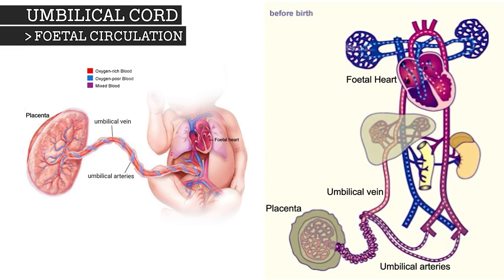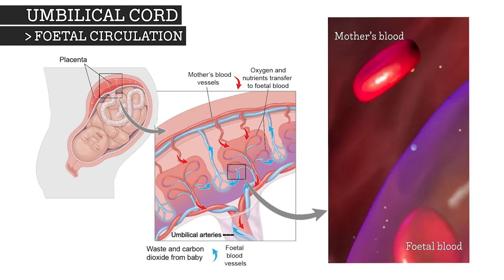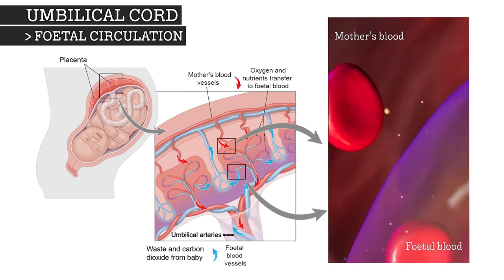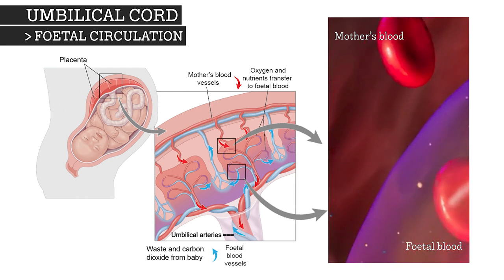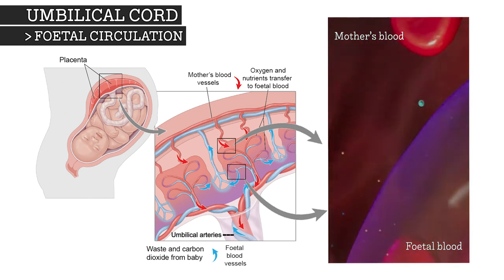From the umbilical arteries, the blood flows back into the placenta, where the waste products are released across the placenta and back into the mother's blood. At the same time, the fetal blood once again absorbs the oxygen and nutrients that the mother has deposited via the placenta, thus completing one whole cycle.